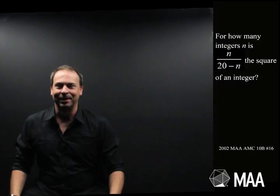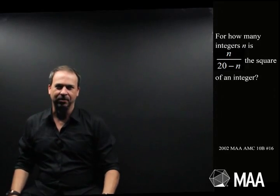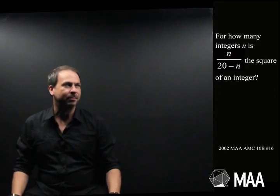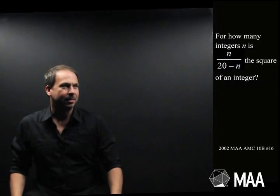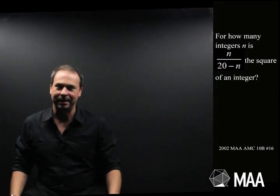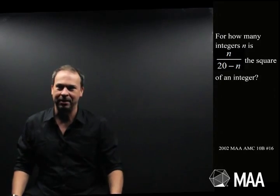G'day! Welcome to another Curriculum Burst. Here's an algebra question for high schoolers. It goes as follows, a little bit strange. For how many integers n is n over 20 minus n the square of an integer?